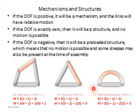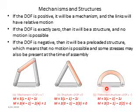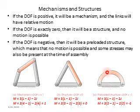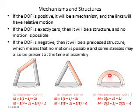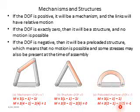For the third example, using the same formula: counting the links gives a ground link and one additional link — so 2 links. Counting the joints gives joint 1 and joint 2 — so 2 joints. Putting these values into the formula gives a mobility or degree of freedom equal to minus 1.